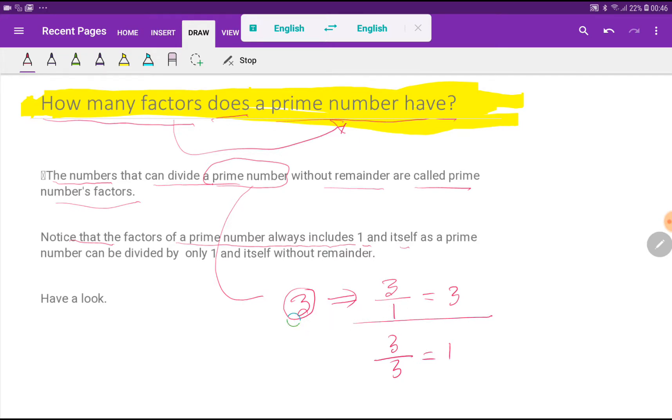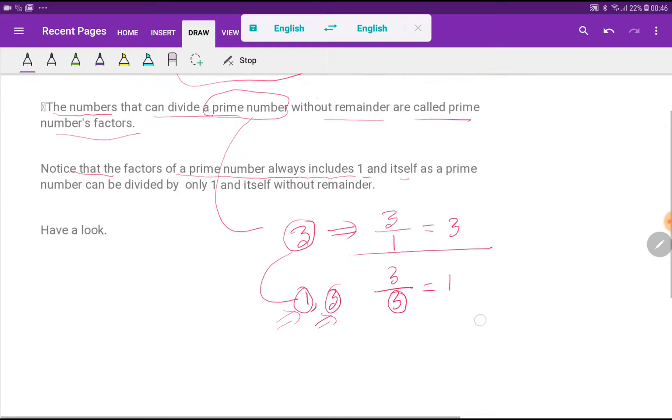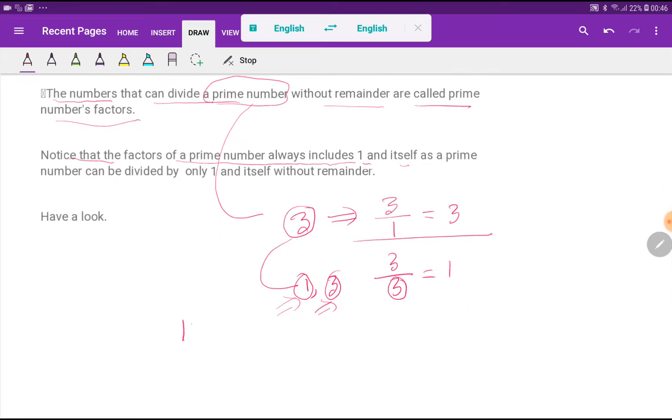So 3 has two factors: the first one is 1 and the second one is 3. That is, a prime number will have two divisors - the first one is 1 and the second one is itself. Look at 13.